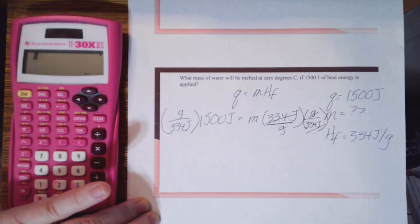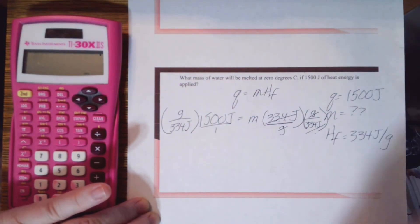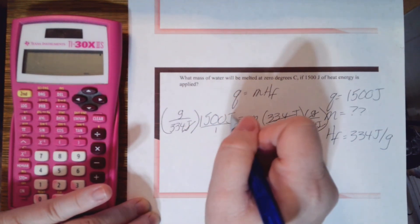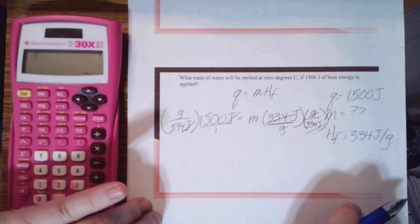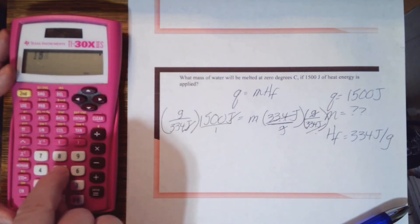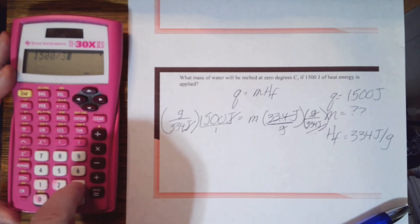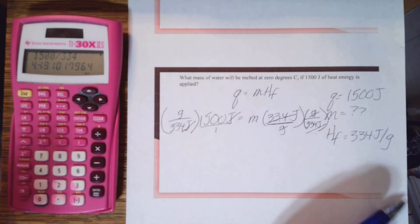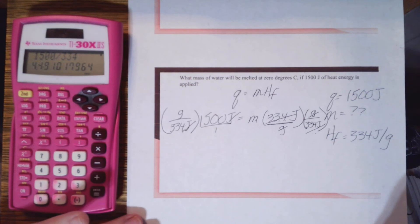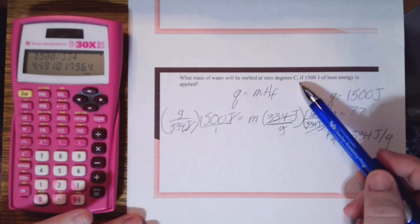That helps me keep the units in the correct spot. Okay, this is really over one like any number, so that means joules would cancel out and I'd be left with grams. Perfect. So let's take 1500 divided by 334. I get this big long number.